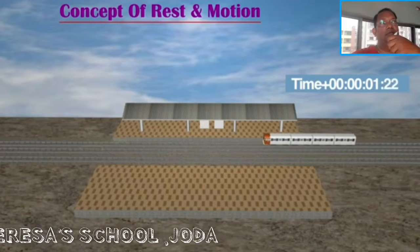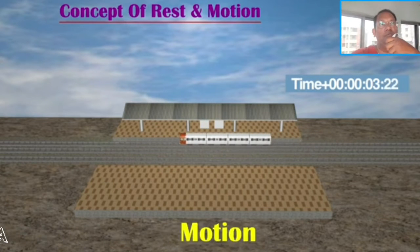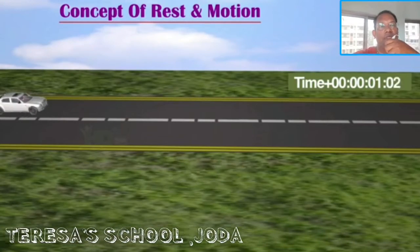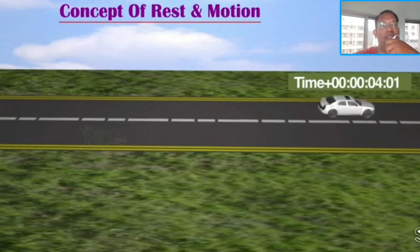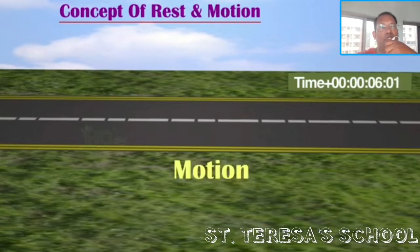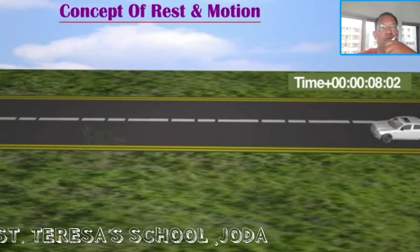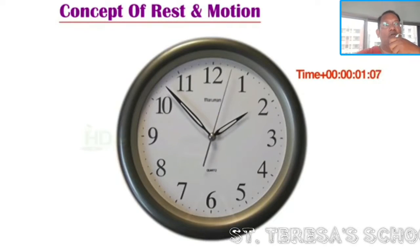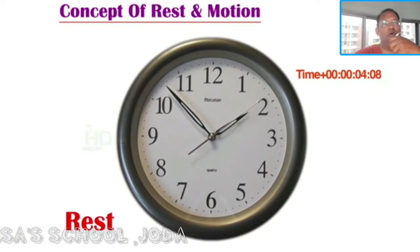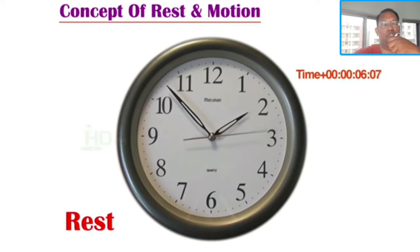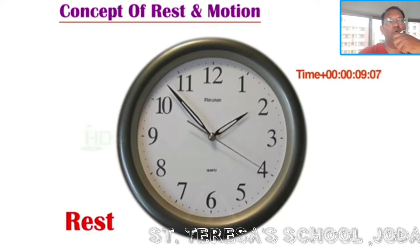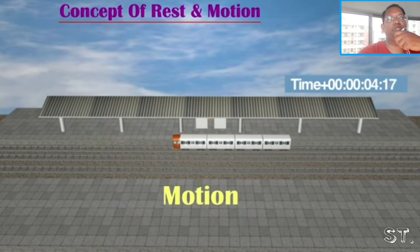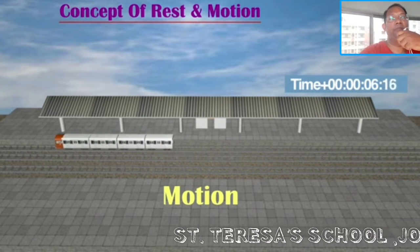Now if we consider this moving train, we can see a change in the position of the train with respect to its surroundings with time, hence it is in motion. Consider this car — it is in motion because it also changes its position with respect to the surroundings with time. This wall clock is at rest because it does not change its position with respect to the surrounding wall with time. A body is said to be in motion when it changes its position with respect to its immediate surroundings with time.